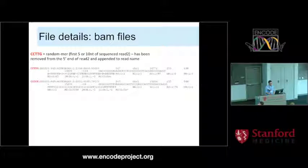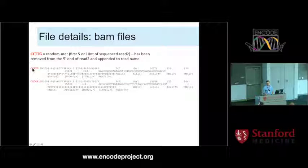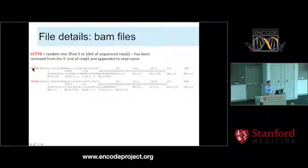The BAM files on the DCC are standard BAM files, except that the randomer is still on the read name, just in case you want to use it for something.